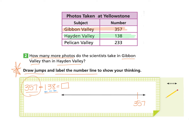You're welcome to pause and try this on your own. I notice I have seven ones but want to take away eight ones — I have more to take away than what I have in my ones column. So I start by taking away seven from 357, arriving at 350. Since there are eight ones to take away, I make one more small jump of minus one, landing at 349.